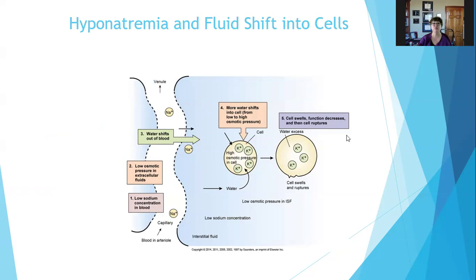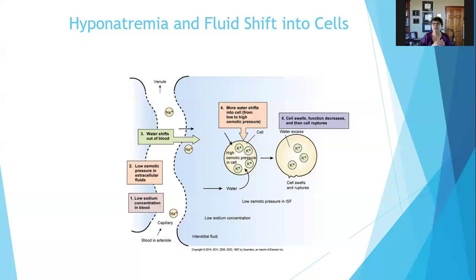With hyponatremia and fluid shift into cells: water shifts out of the blood because low sodium concentration causes low osmotic pressure in the extracellular fluids. More water then shifts into the cells — moving from low to high osmotic pressure — and the cells swell, decreasing their function and potentially even rupturing the cells.